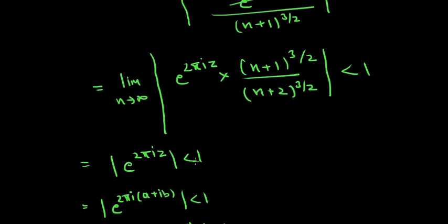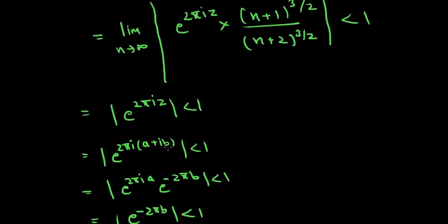We can further solve it by taking z = a + ib. I'm doing this because the question in my book said imaginary part of z is greater than 0. I'll show you what this means.